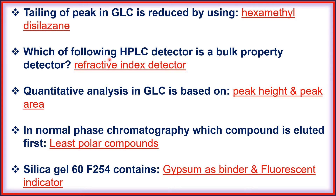Which HPLC detector is a bulk property detector? That is the refractive index detector. Quantitative analysis in GLC is based on peak height and peak area.